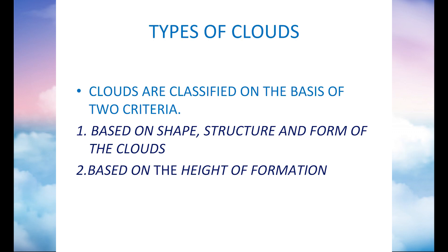Clouds are classified on the basis of two important criteria. One is on the basis of their shape, form, and structure. They are given some names. The second one is based on their altitude — high, middle, and low.